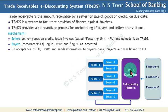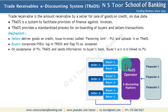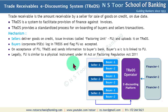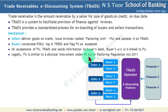The TReDS system generates information about this acceptance and sends it to the buyer's bank. The buyer's bank account is linked to the factoring unit and also to TReDS. Legally, this factoring unit is similar to a physical instrument under the Negotiable Instrument Act or the Factoring Regulation Act 2011. This means if the buyer does not make payment, there is a legal remedy available in the system.